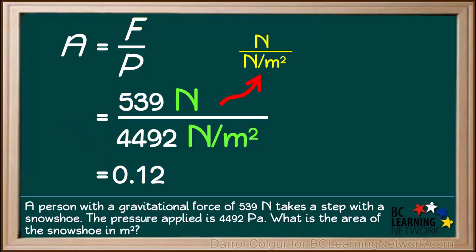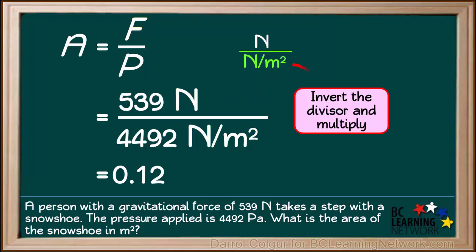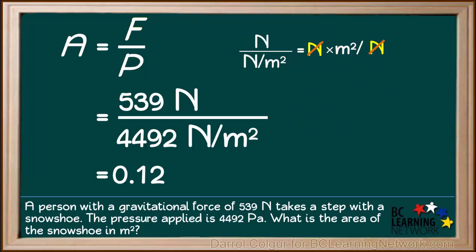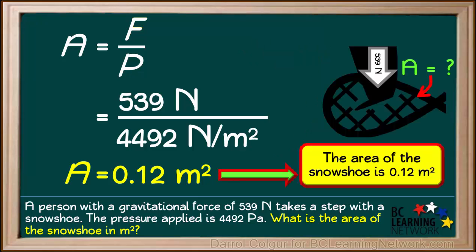Looking at the units, Newtons are divided by the fraction Newtons per square meter. In order to divide by a fraction, we invert the divisor and multiply, giving us Newtons times square meters over Newtons. Newtons will cancel out, leaving us with square meters as a unit. So, the final answer is the area of the snowshoe is 0.12 square meters.